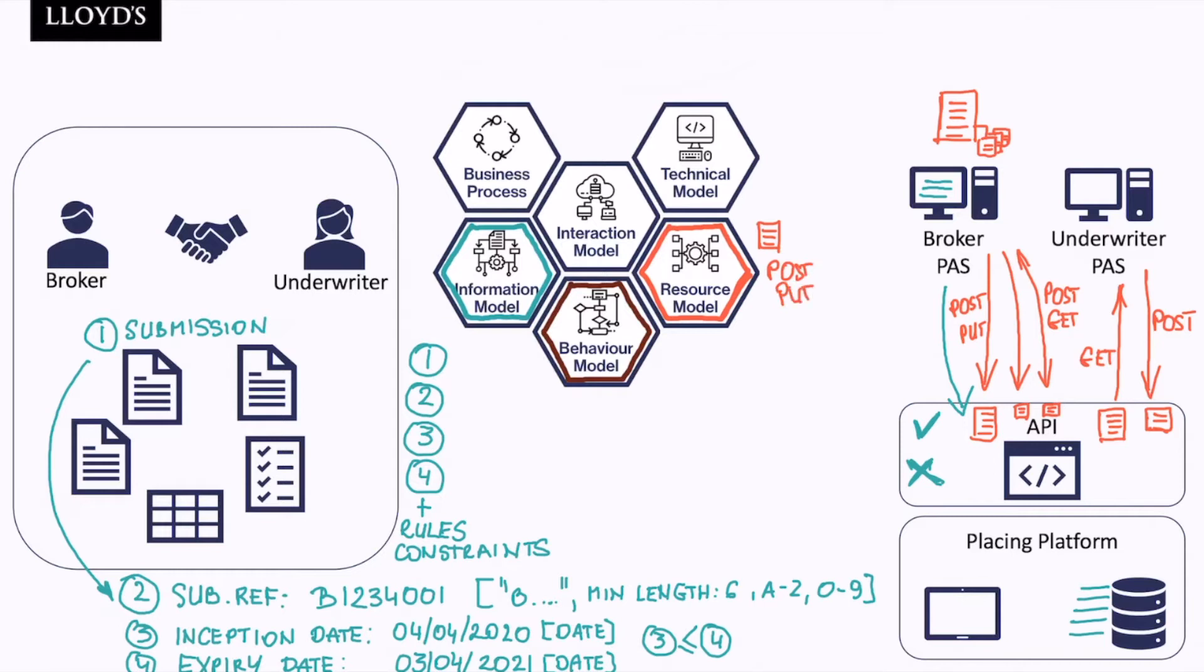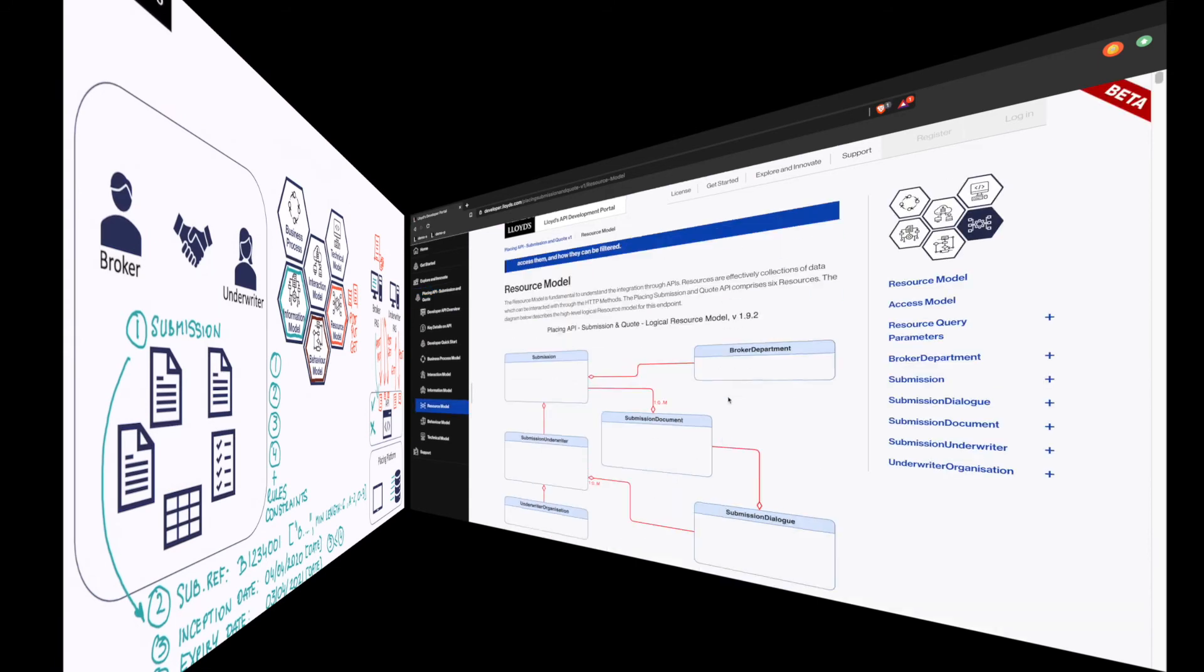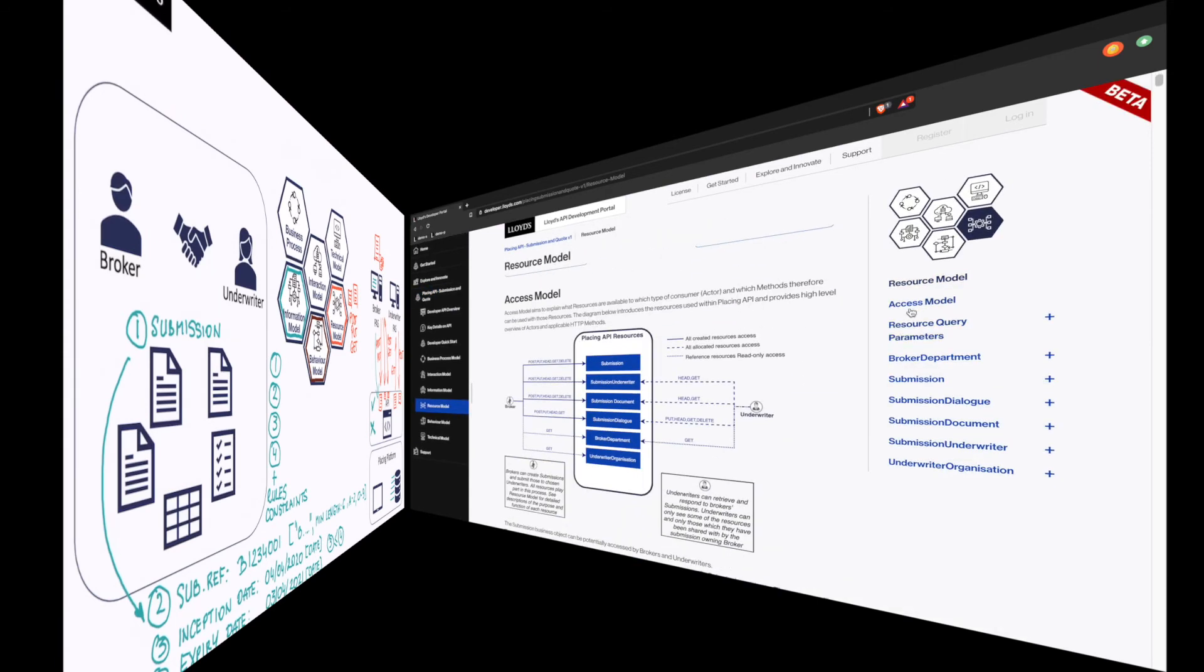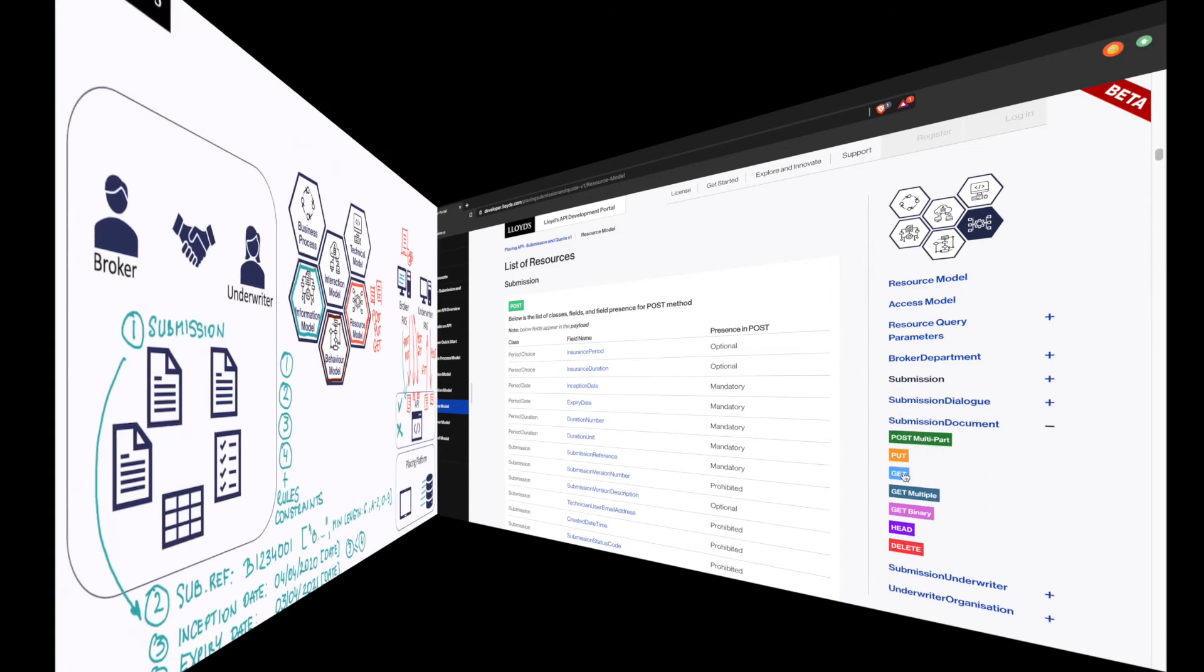Detail specification of what API expects on the input and what API can provide on the output. And all these details can be actually found on the resource model section of the portal, with resource model, access to the resources, and every single resource described and defined including methods like for example post, get or put.